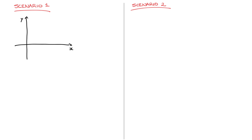For my first example, let's say we're given the curve y equals the square root of x — that's the curve I've drawn here. And let's say I want to calculate the area enclosed by this curve and the y-axis between y equals one and y equals four. That would be the area I'm shading right now.